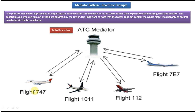In the down you can see different kinds of flights like flight 747, flight 1011, flight 112, and flight 7E7.